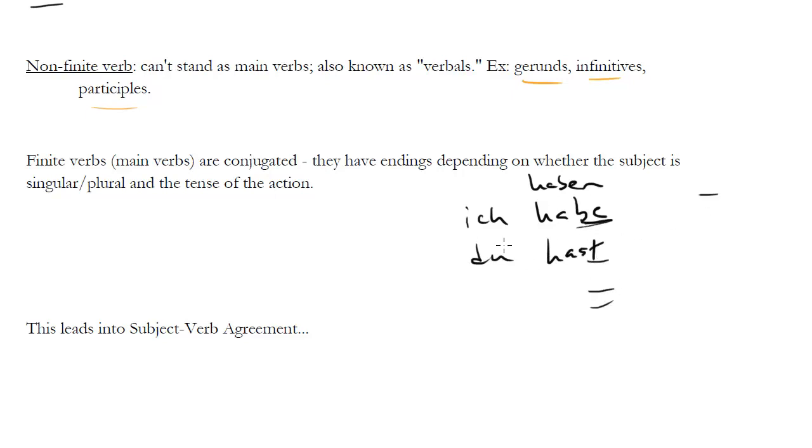So we change the ending depending on if you're looking at a first person singular, second person, third person, whatever you're looking at, right? English, it's not too bad. English is pretty easy. Let's take the verb walk. So if it's I, first person singular, it's just walk. This is the present tense, by the way, present tense.